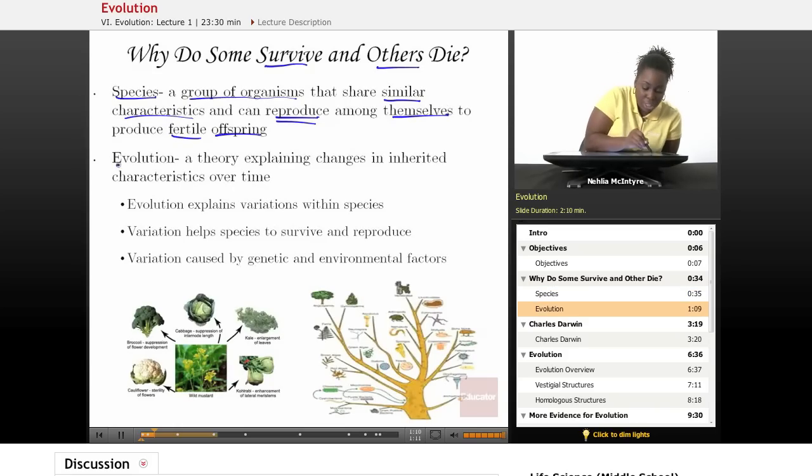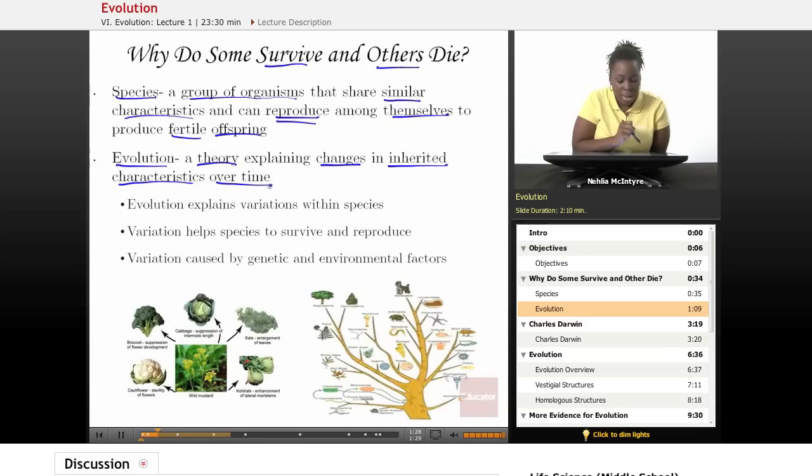Now, evolution is a theory that is our best explanation of why certain changes occur over the many generations within a species. And we see those changes in inherited characteristics over time. So evolution explains why there are certain variations within a particular species.